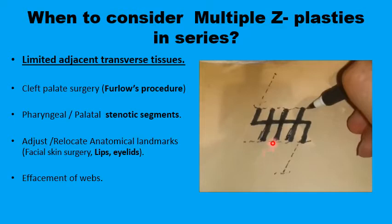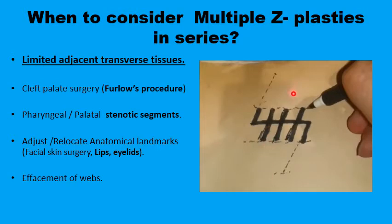You are dealing only with one centimeter and doing it four times. This applies in situations like if you are working in the palate, the pharynx, the lips, the eyelids, and any field with limited tissues in the transverse axis to your Z-plasty, or if these tissues are inelastic.